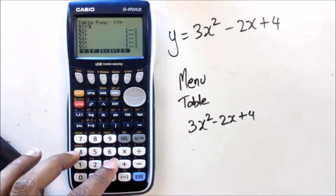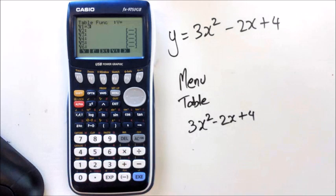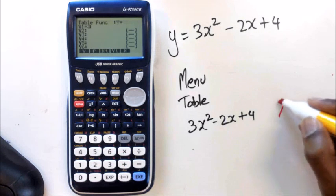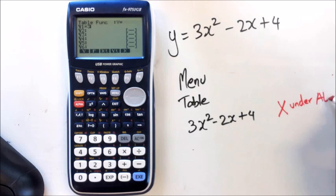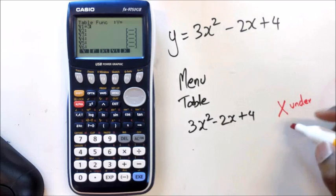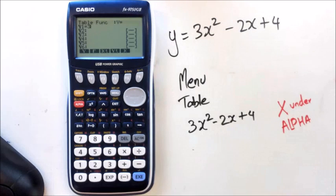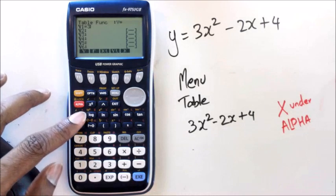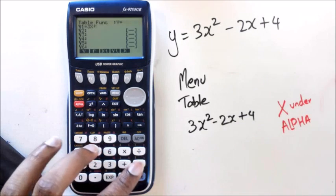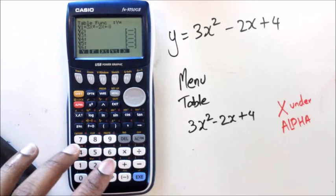So 3, now just remember to use the x under the alpha button, always use the x under the big red alpha button. That's right here we're talking about. So we've got 3x squared minus 2x plus 4.